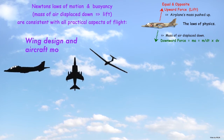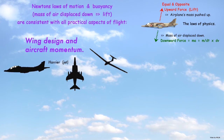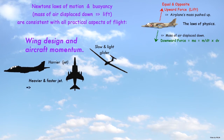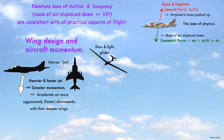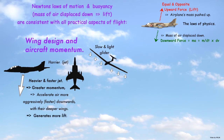Wing design and aircraft momentum impacts the amount of air displaced down and the lift generated. For example, heavier and faster jets have greater momentum and therefore they are able to accelerate air downwards more aggressively with their deeper wings. This generates more lift overall, despite their short wingspans.